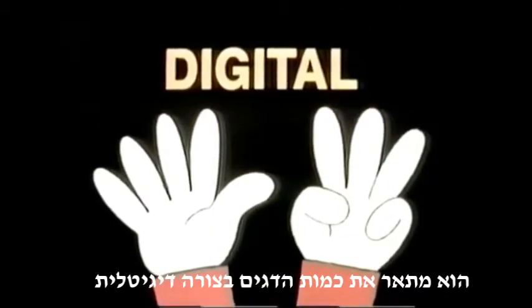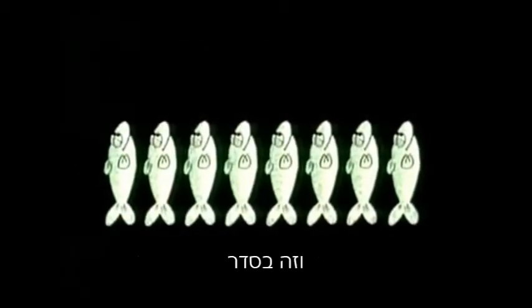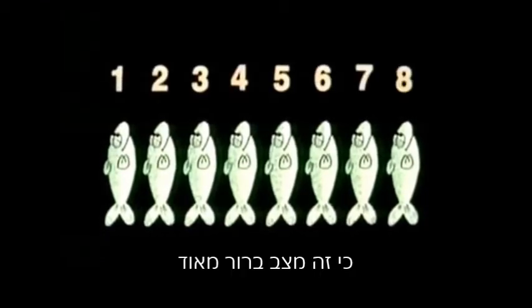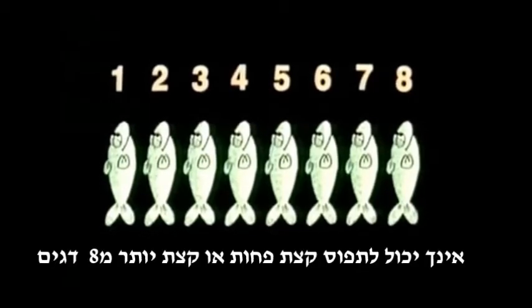He's using separate individual digits to describe separate individual objects, which is fine, because this is a very clear-cut situation. You either catch eight fish, or you don't. You can't catch a little less or a little more than eight fish.